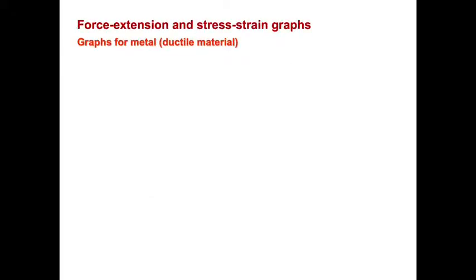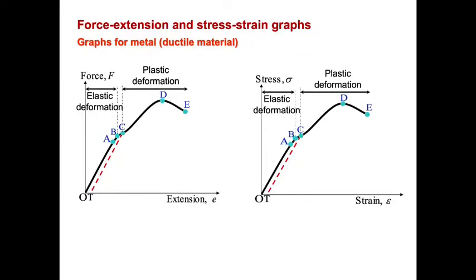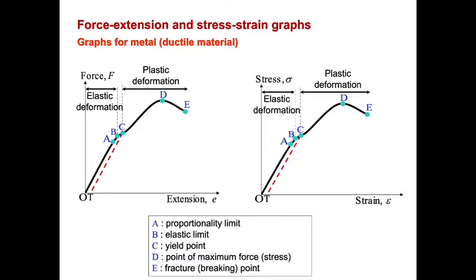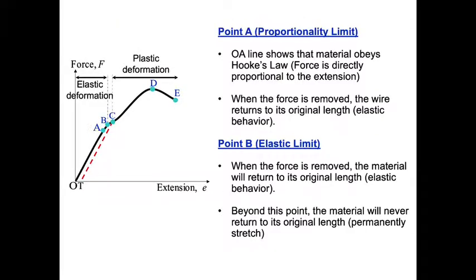For force-extension and stress-strain graphs for ductile materials, if you can see here, the force-extension on my left and stress-strain on my right have exactly the same pattern, the same form graph, where both undergo elastic deformation and plastic deformation. You can see that we have several points: O, A, B, C, D, and E. So, what do these points tell you?